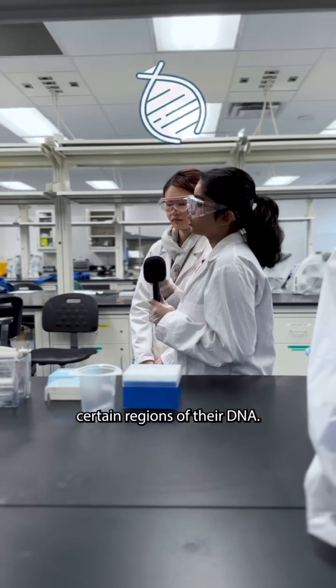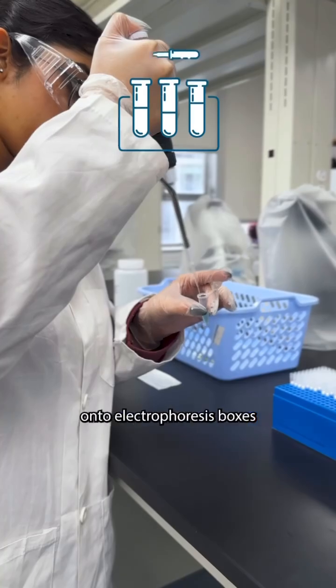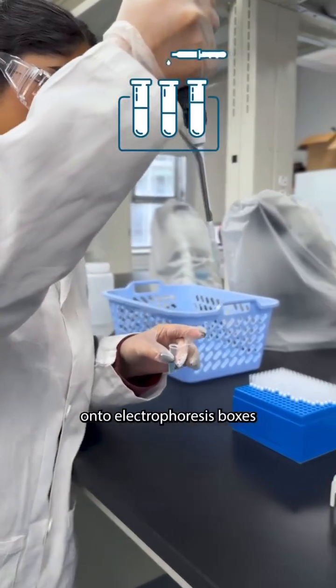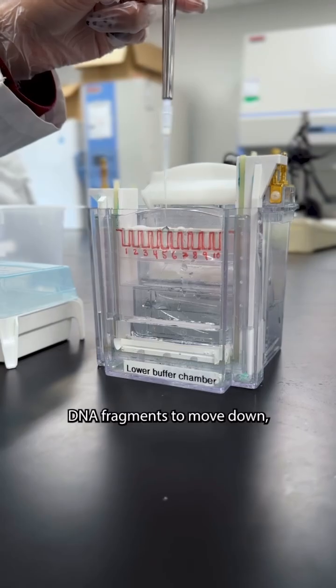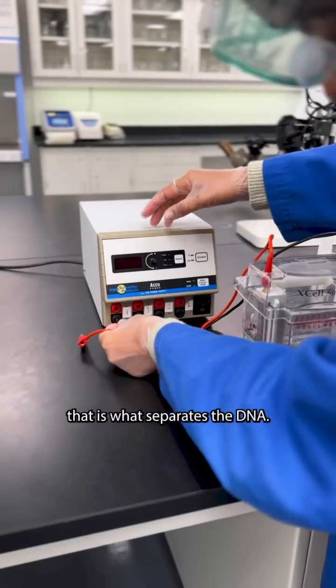The next step, they amplify certain regions of their DNA. With those DNA fragments, they load their samples onto gel electrophoresis boxes and this allows the DNA fragments to move down. The DNA is run under electricity. That is what separates the DNA.